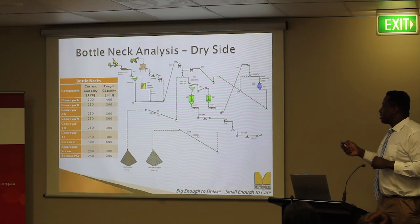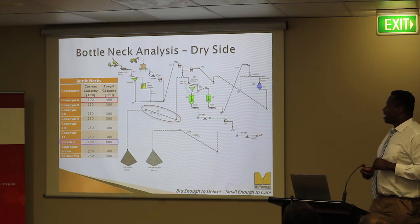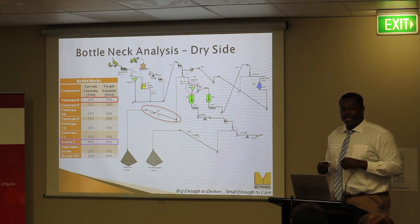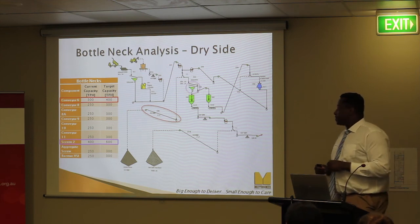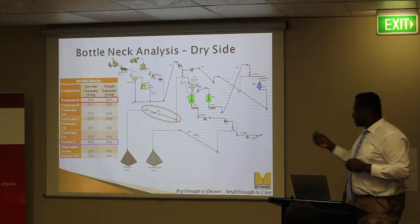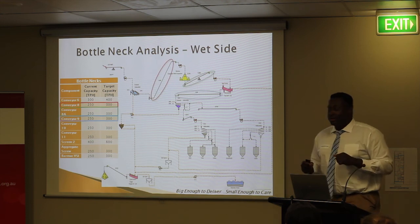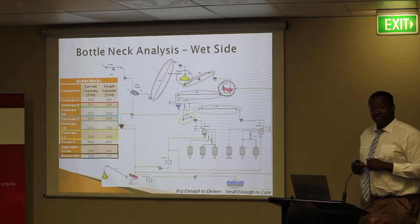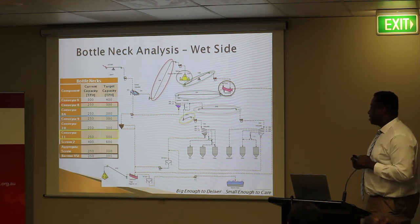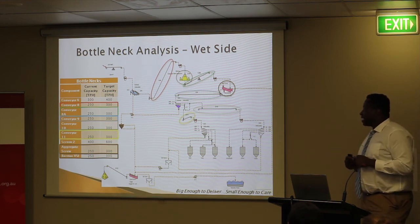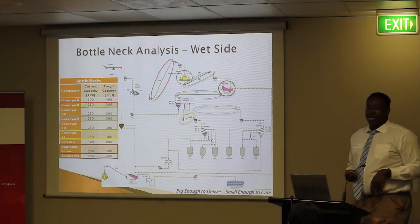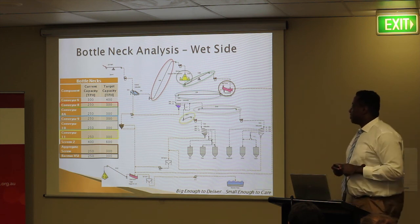On the dry side, conveyor belt 6 requires an additional 33% increase to its current capacity to reach 400 tonnes per hour. Screen 2 requires an additional 50% increase to its current capacity to reach 600 tonnes per hour. On the wet side, conveyor belts 8 to 11 all require an additional 20% increase to boost capacity to 300 tonnes per hour. The aggregate screw and Barmac Crusher also require an additional 20% increase to reach 300 tonnes per hour.